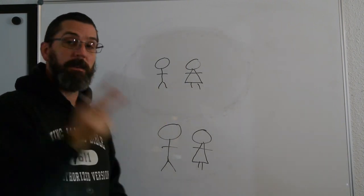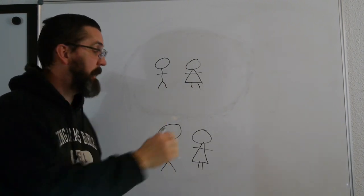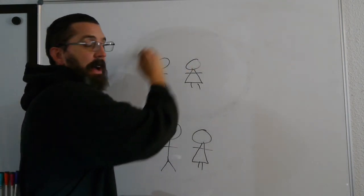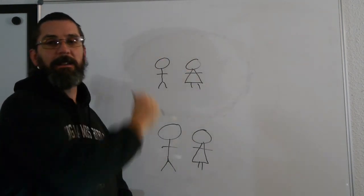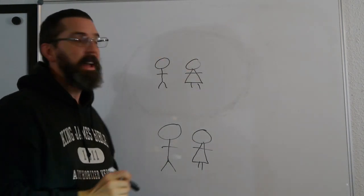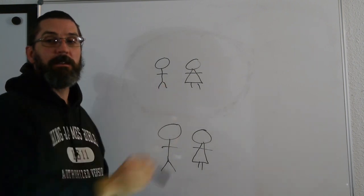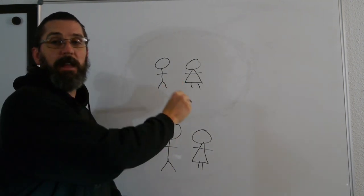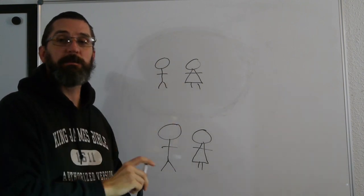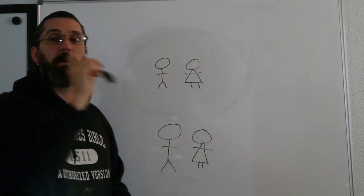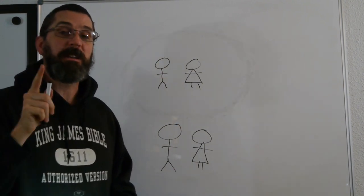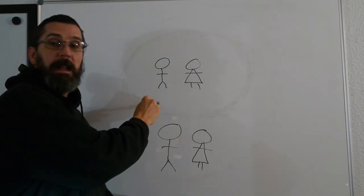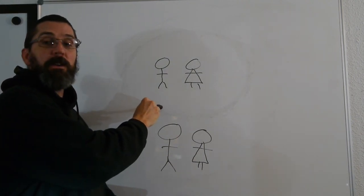People sin against liberty — remember the two types. First, they try to reestablish that circle, saying 'No, you've still got to eat only certain meats, you've still got to only do this or that' — a law written in Scripture they're still trying to hold you accountable to in order to be saved. That's the first way you sin against liberty.